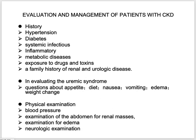A hearing abnormality with renal failure should raise suspicion for Alport syndrome. Systematic review should cover joint pain, symptoms of fluid overload (peripheral edema, chest pain), anorexia, nausea, vomiting, restless leg syndrome, fatigue, weakness, pruritus, bone pain, and impotence.